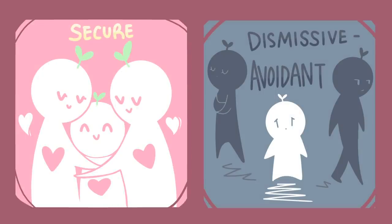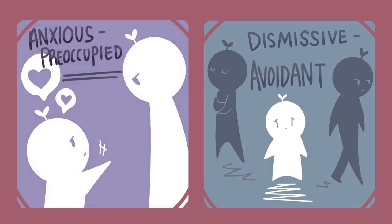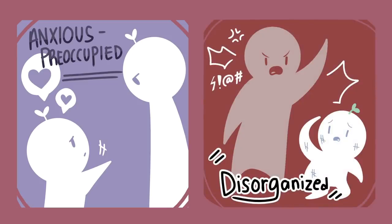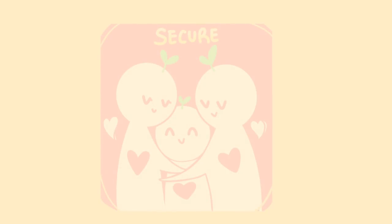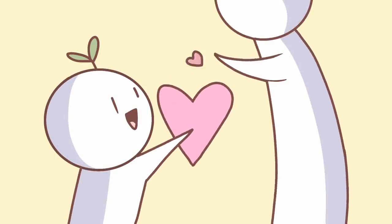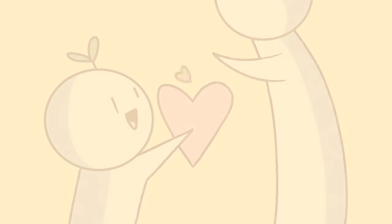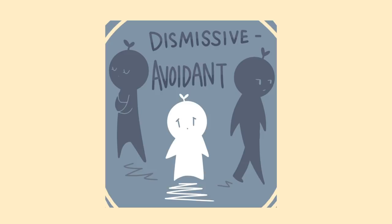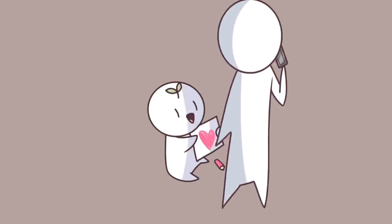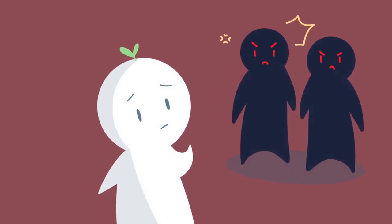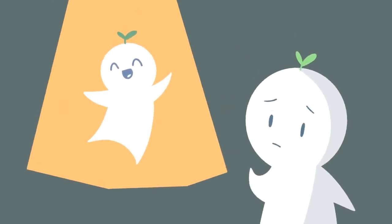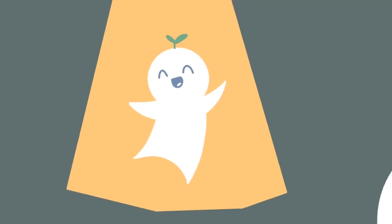The four attachment styles are: secure, dismissive avoidant, anxious preoccupied, and disorganized. Secure attachment is when needs were usually wholly satisfied at an early age, so you believe people are good and trustworthy, and you feel worthy of love. Dismissive avoidant — or simply avoidant — is when there was neglectful parenting from childhood. You see others negatively but yourself positively, resulting in believing you can only trust yourself.